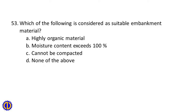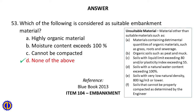Question 53: Which of the following is considered a suitable embankment material? A. Highly organic material, B. Moisture content exceeds 100%, C. Cannot be compacted, D. None of the above. Answer: D. None of the above. Reference: Blue Book 2013, Item 104 Embankment — Unsuitable material.